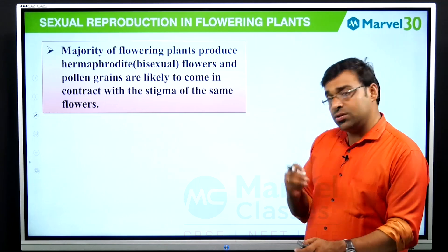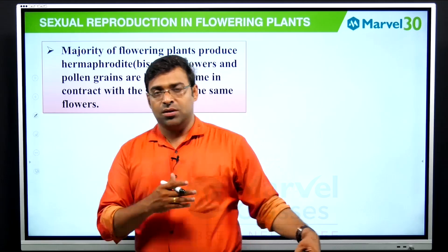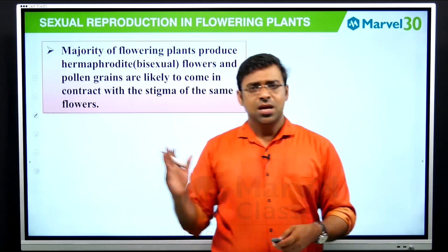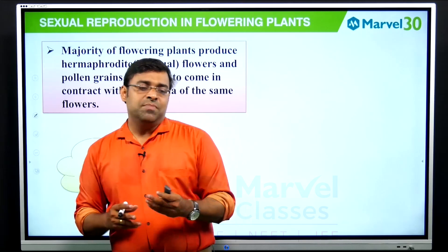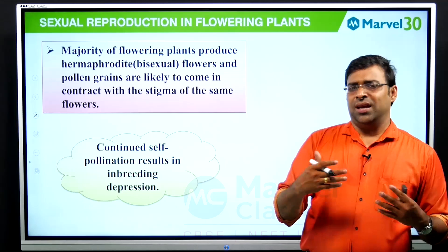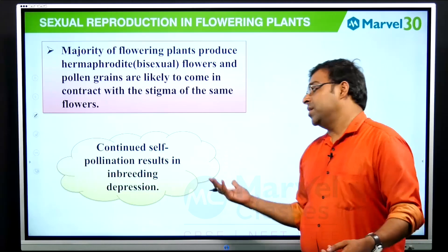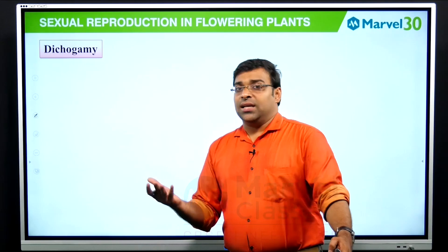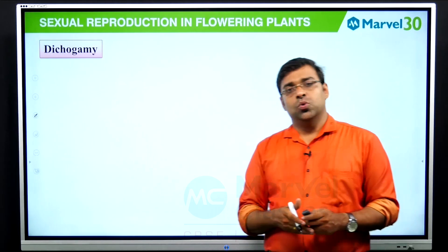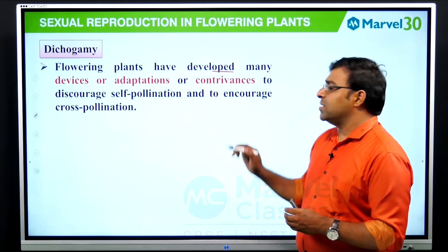The majority of flowering plants produce hermaphrodites, that is bisexual flowers, and pollen grains are likely to come in contact with the stigma of the same flower. But continuous self-pollination results in inbreeding depression — continuously breeding with the same plants will not produce any varieties. To overcome this, plants develop devices to opt for cross-pollination.